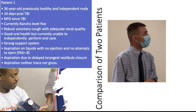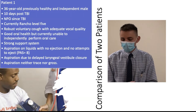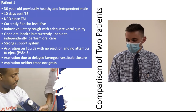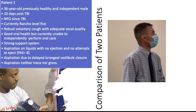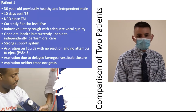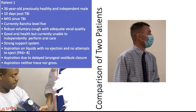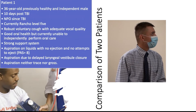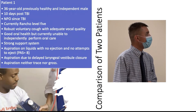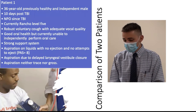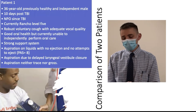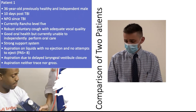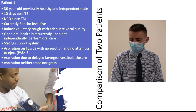The first is a young gentleman who's 36 years old. He was previously premorbidly independent and healthy with unremarkable medical history. He's now a 10-day status post-TBI and has been NPO since that TBI. He's currently at Rancho Level 5, has a robust voluntary cough with adequate vocal quality, good oral health, but is unable to perform oral care independently. He has a very strong support system that can help assist with that.